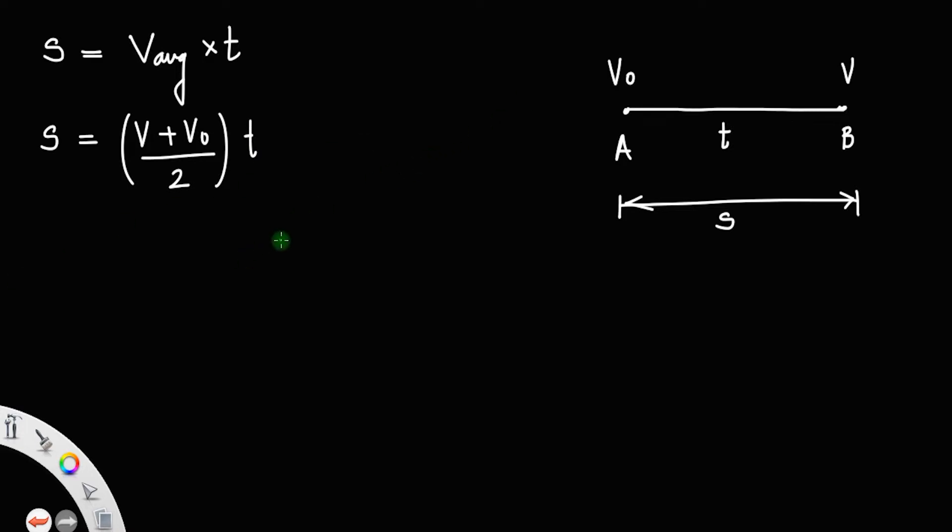From the first kinematic equation, you know the final velocity will always be v0 plus at. You can substitute this v in here, therefore s is equal to v0 plus at plus v0, divided by 2, into time.